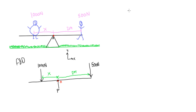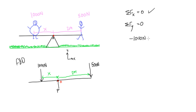For static equilibrium, the sum of forces in the x direction has to equal zero. There are no forces in the x direction — they're all pointing in the positive or negative y direction, so that condition is satisfied. The sum of forces in the y direction must also equal zero. So we have negative 1000 newtons minus 500 newtons plus F equals zero, giving us F equals 1500 newtons.